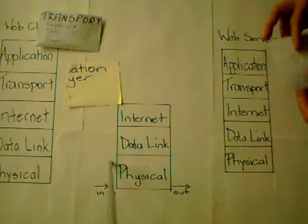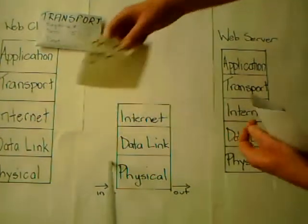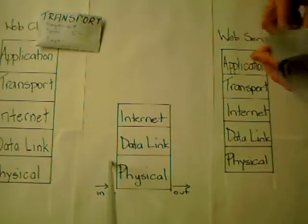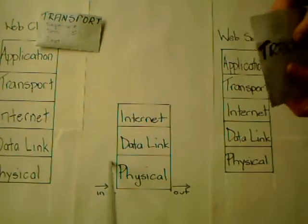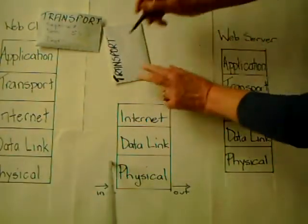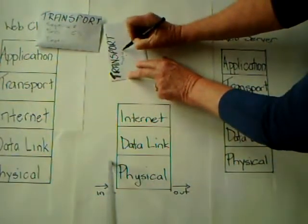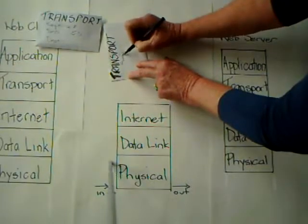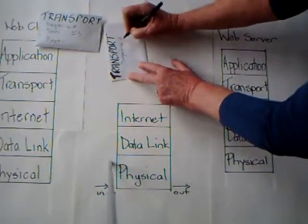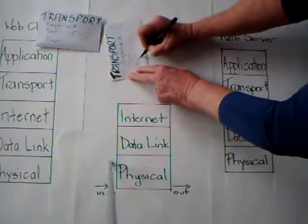Because we've got two pieces of this message, we have to put them into two separate PDUs or envelopes. Each one has a sequence number and source and destination port numbers.